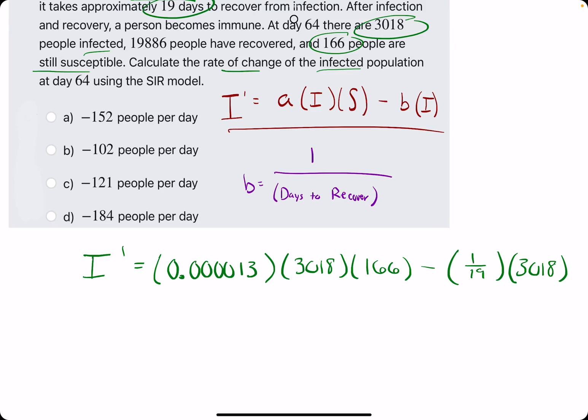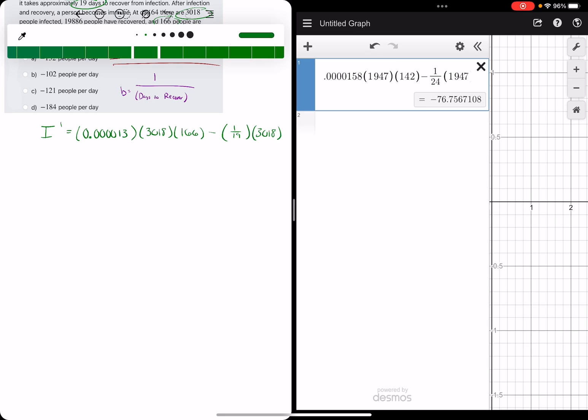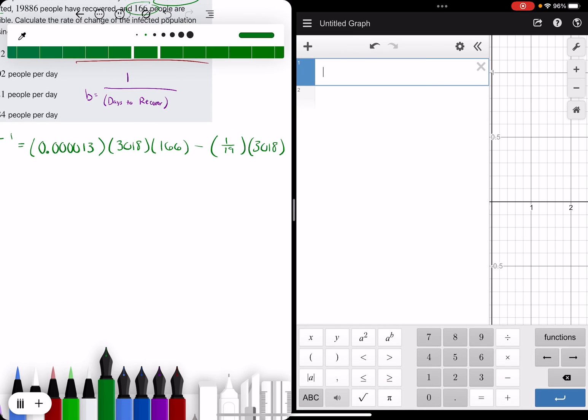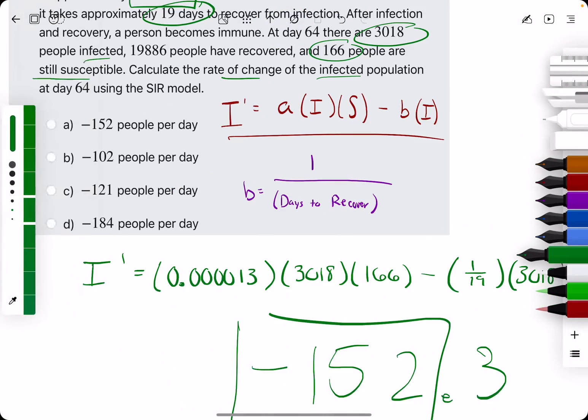So let's go ahead and plug this into Desmos. Let's try our split screen again and give it a go. So we are doing 0.000013 times 3018 times 166 minus 1 over 19 times 3018, and that gives us negative 152.3, but probably just round to 152, negative 152. Let's go back to this.